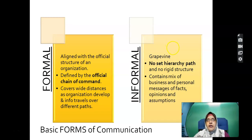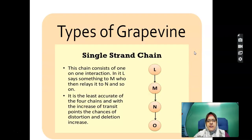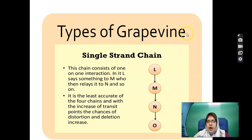In formal communication, you speak to a lecturer, academic advisor, or course coordinator — and likewise at work, you will speak with your boss or supervisor. In informal communication — the grapevine — it consists of one-on-one interaction. You have heard of gossip, or the saying 'where there's smoke there's fire.' The single strand chain is where L tells M, M tells N, N tells O — it is the least accurate.